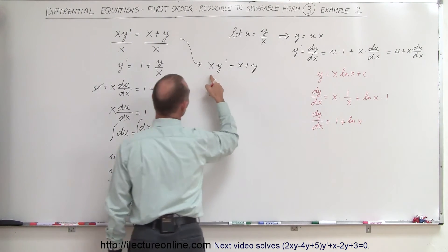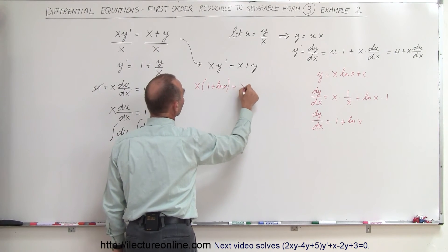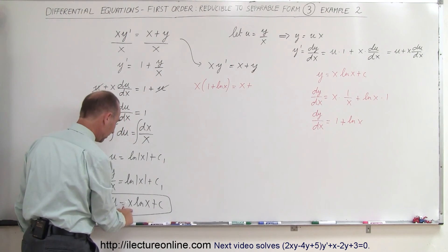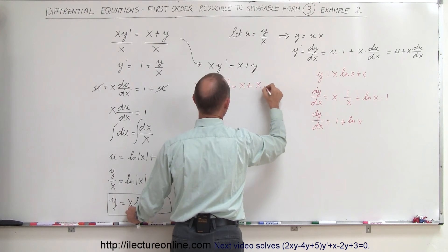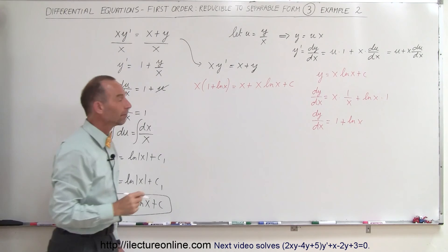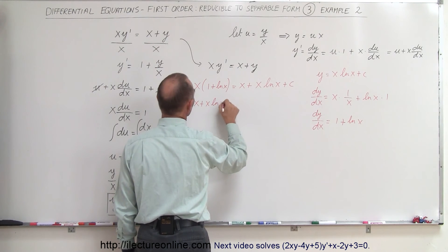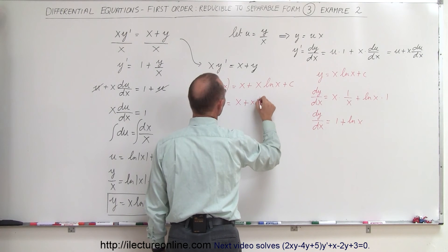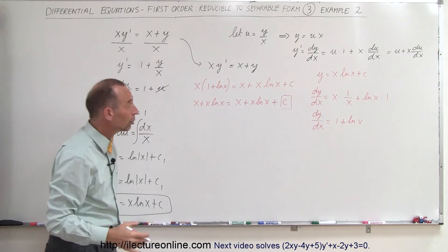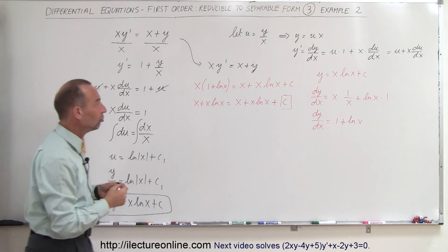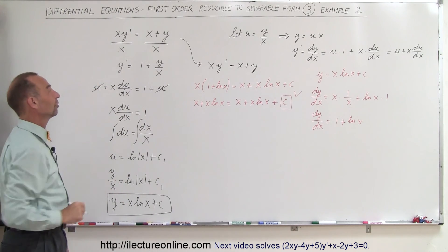Coming back to the original equation, we write x times y prime — which is 1 plus the natural log of x — and on the right side x plus y, where y is x times the natural log of x plus the constant. Working out both sides, the left gives x plus x times the natural log of x, which equals x plus x times the natural log of x plus the constant. This shows the left side equals the right side, confirming this is indeed a solution to the original differential equation.